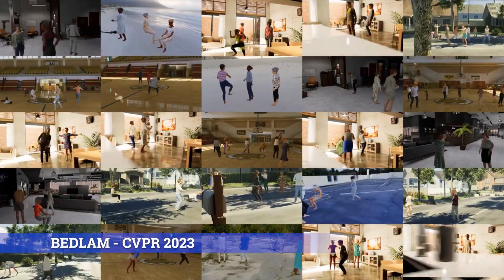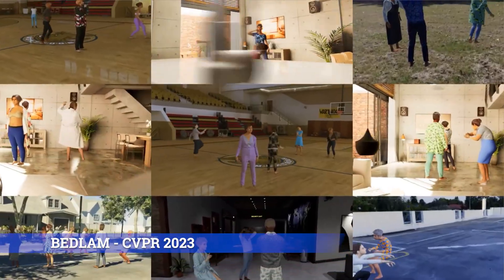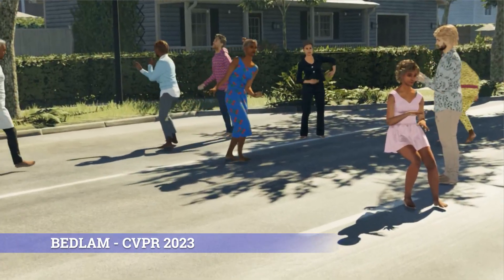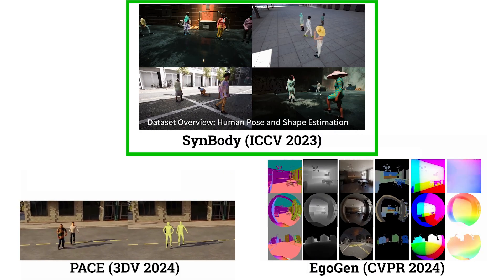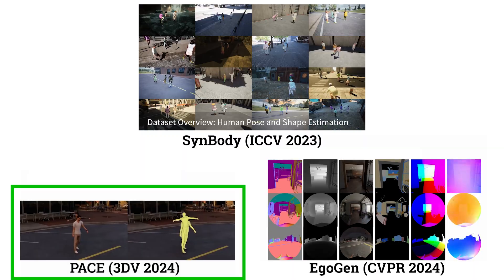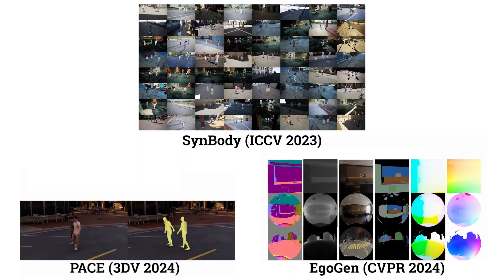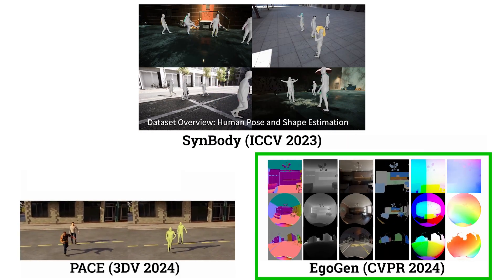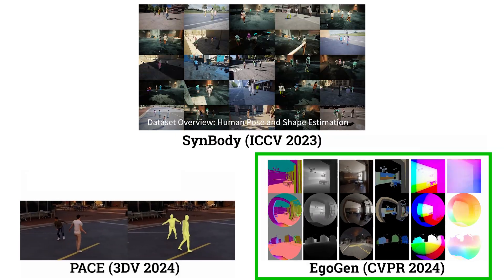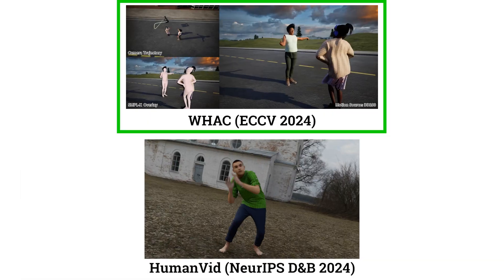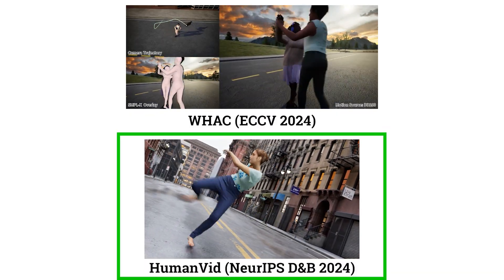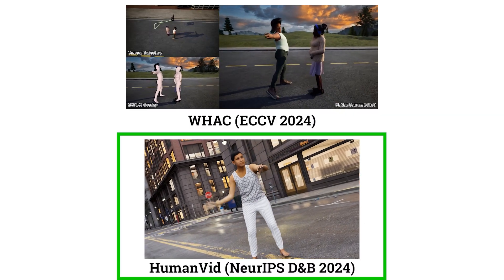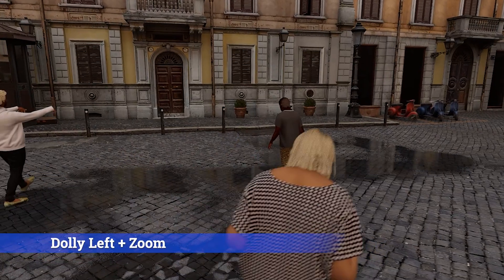Bedlam was the first synthetic dataset with sufficient realism and diversity that state-of-the-art HPS methods could be trained using it without any real image data. Since its publication, several other datasets have been proposed. Synbody is similar to Bedlam but has lower visual realism and no camera motion. PACE adds complex camera motions but does not contain sufficient data for training HPS methods. EgoGen builds on Bedlam to create a synthetic dataset from an egocentric camera with naturalistic ego-motion. Wack adds two-person interaction sequences and camera motions. HumanVid also builds on Bedlam and adds rule-based camera motions with single people and anime characters. Bedlam 2 goes beyond these datasets, expanding Bedlam in every way and introducing a wide variety of camera motions and focal lengths.